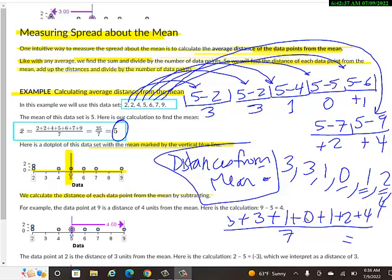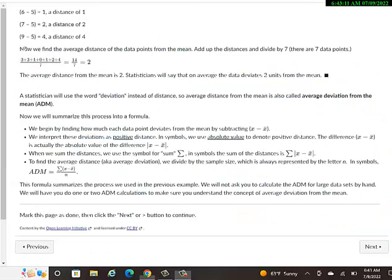And we said that's 14, right? 14 over 7, which is 2. So the average distance of all these data values from the mean is 2. So they've shown down here that they've done the same. Add the distances and divide by 7. They got 2 as well. The average distance from the mean is 2.